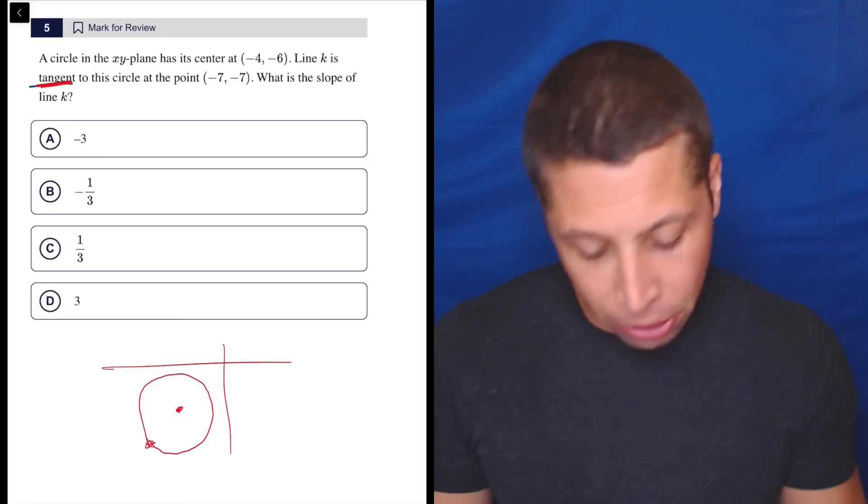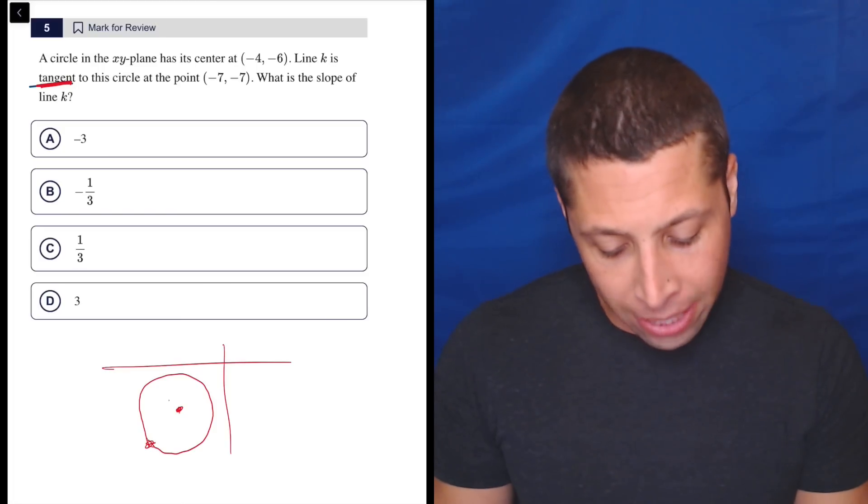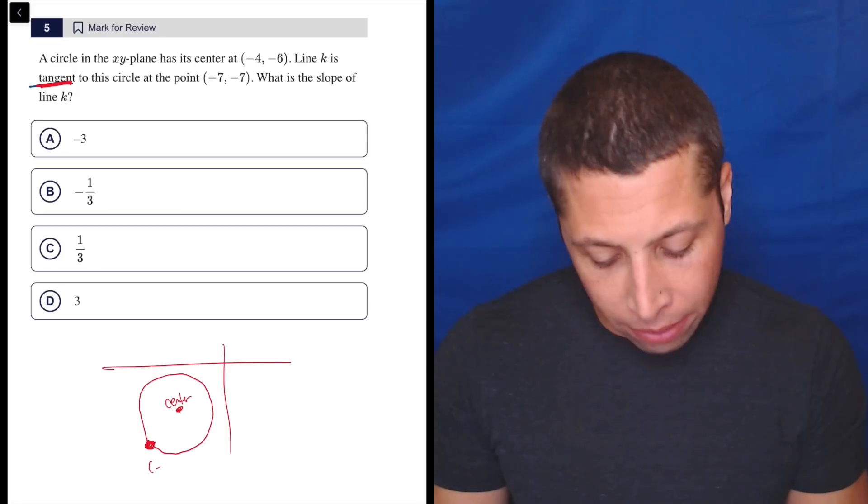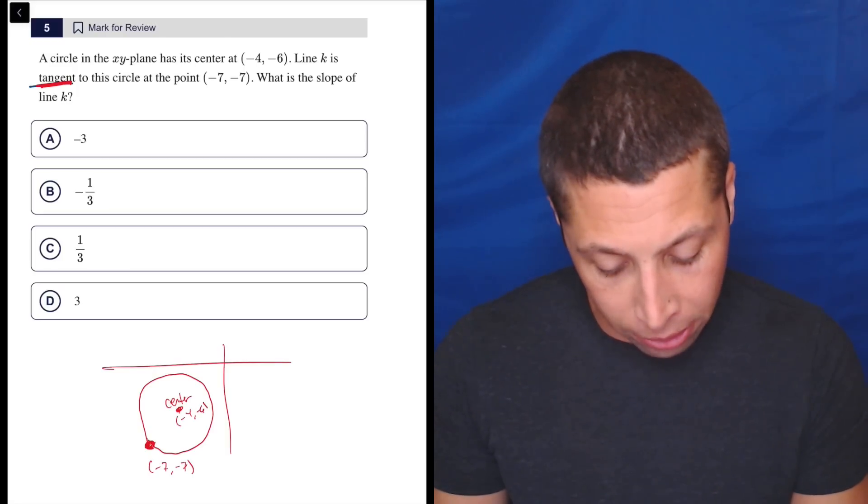So basically we have a circle. It's going to be a lumpy circle, but you get the point. So there's my center and there's that point, negative seven, negative seven, where it's tangent. So negative four, negative six.